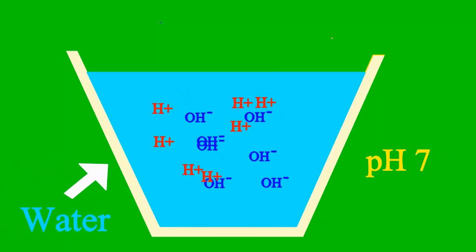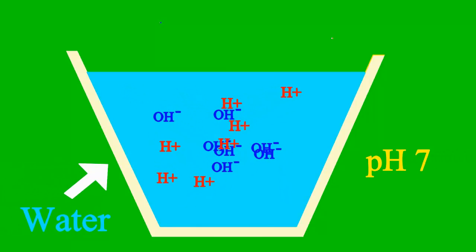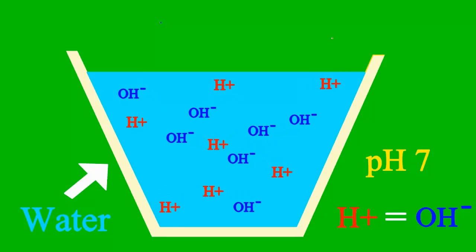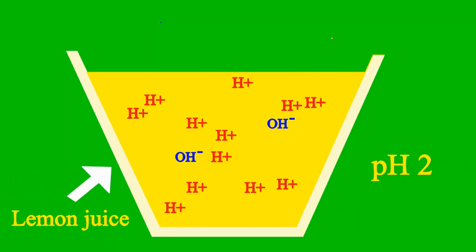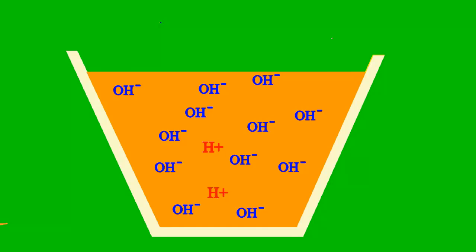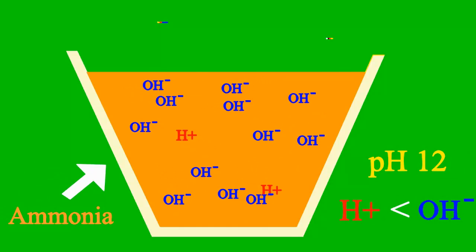When the pH is 7, the sample is neither an acid nor base. Less than 7, it's an acid. More than 7, it's a base all the way.